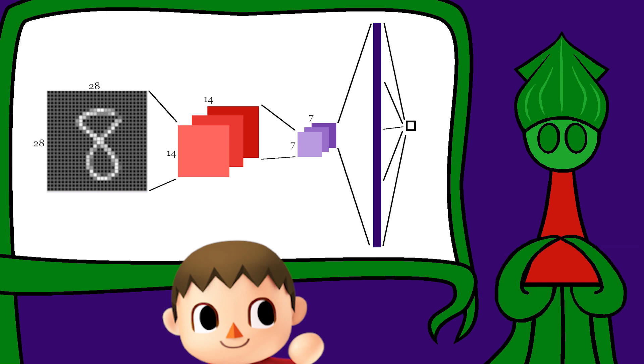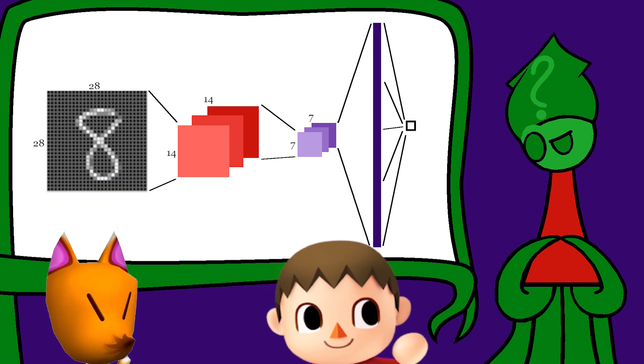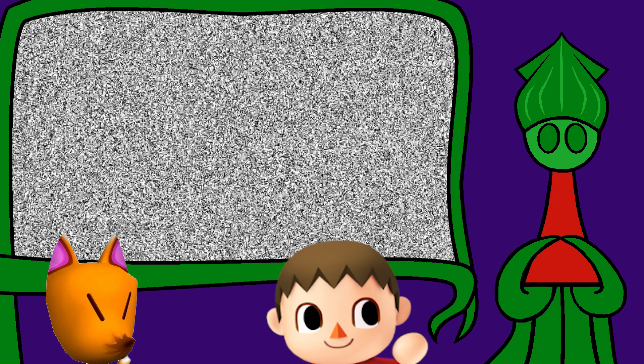So the discriminator doesn't look at art in the holistic way we do. It interprets art by the relationships between its pixels. How does Red, the generator, generate images?